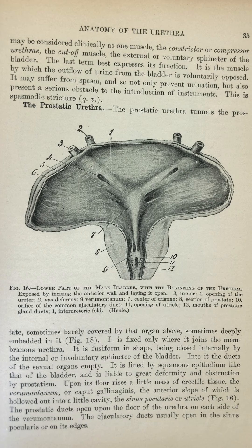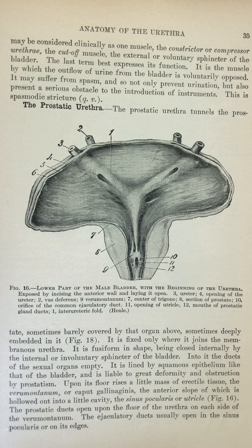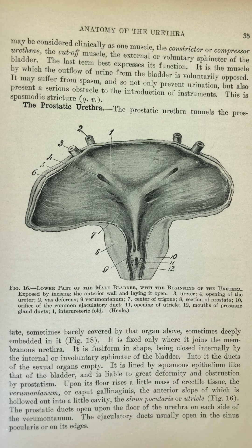Upon its floor rises a little mass of erectile tissue, the verumontanum, or caput gallinaginis, the anterior slope of which is hollowed out into a little cavity, the sinus pocularis, or utricle, as shown in figure 16. The prostatic ducts open upon the floor of the urethra on each side of the verumontanum. The ejaculatory ducts usually open in the sinus pocularis or on its edges.